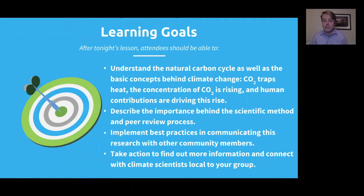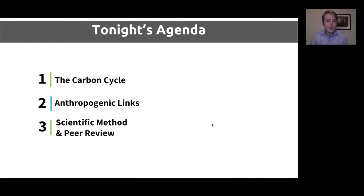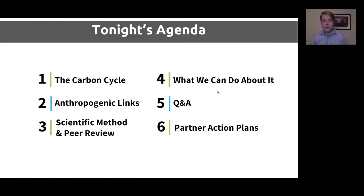The agenda tonight is six-fold: we'll talk about the carbon cycle, then jump into anthropogenic links, the scientific method and peer review, what we can do about it, an extended Q&A discussion, and close with partner action plans — as we always do for core volunteer training — to really engage you with this content and help you become more expert in your own interest areas.